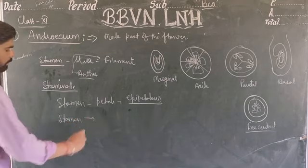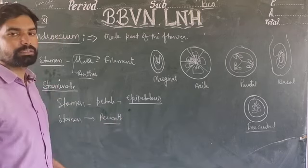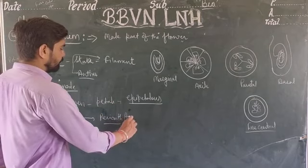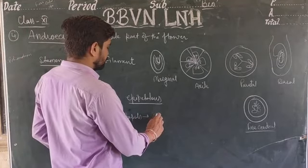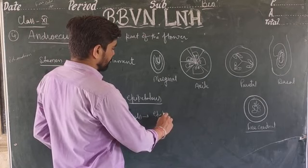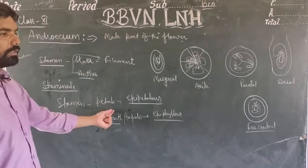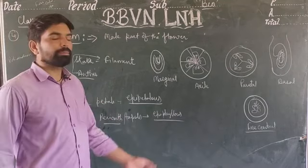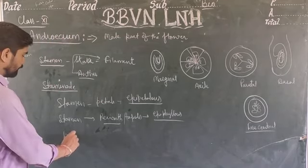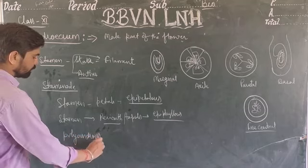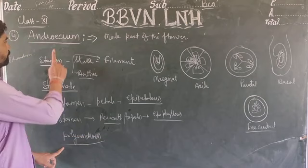If the stamen is connected with the perianth, it is known as epiphyllous. So epipetalous means stamen connected to the petal, and epiphyllous means stamen connected to the perianth.